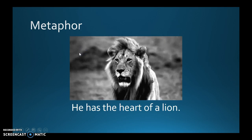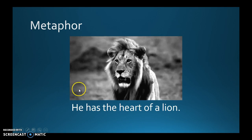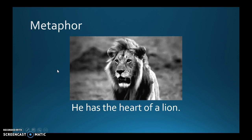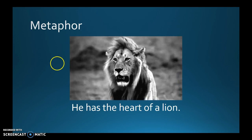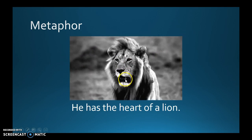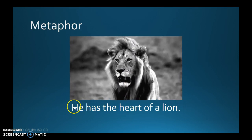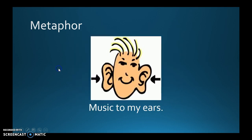Now, a metaphor is similar in the regard that you're comparing something unknown to something known. The difference is that you do not use 'as' or 'like' in a metaphor. For example: 'He has the heart of a lion.' I kind of think of lions as courageous, brave, or strong. So you're using this metaphor to help describe the character, meaning that they're brave or strong. Another example: 'Music to my ears.'